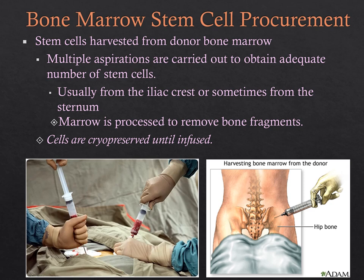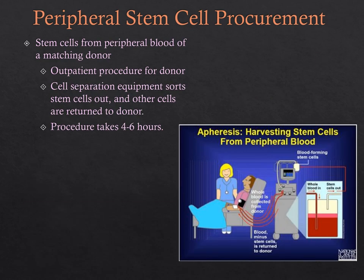We can harvest stem cells from donor bone marrow through multiple aspirations, going in through the iliac crest to retrieve stem cells and process them to deliver to the client with bone marrow suppression. We can also do peripheral stem cell procurement from peripheral blood of a matching donor — an outpatient procedure taking about four to six hours, where a machine separates the stem cells from other cells and returns the blood back to the donor.